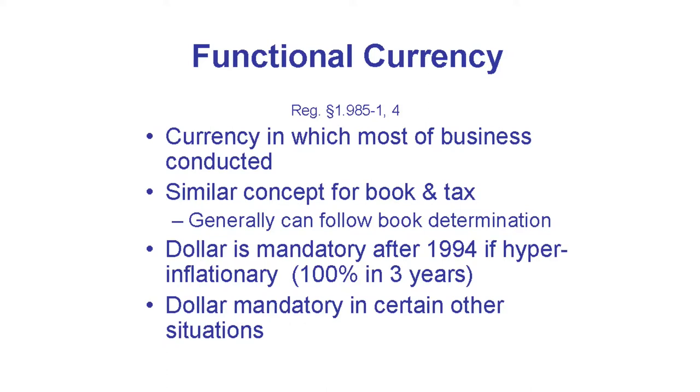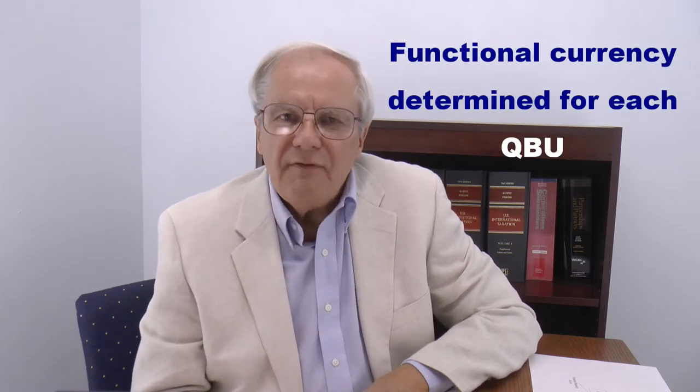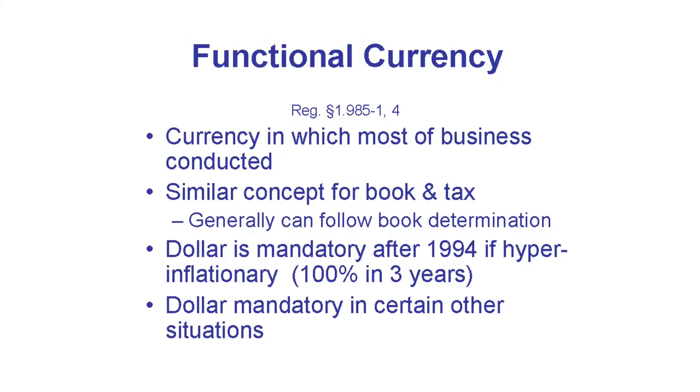In parts one and two I've talked about functional currency and QBU as if you know what they mean. Now we'll discuss them more. Functional currency is both a book and tax concept — this is one of the few areas where US tax rules refer to US GAAP. Tax regulations say a functional currency used for books should be followed for tax unless it's clearly erroneous. Functional currency is determined at the level of a qualified business unit.